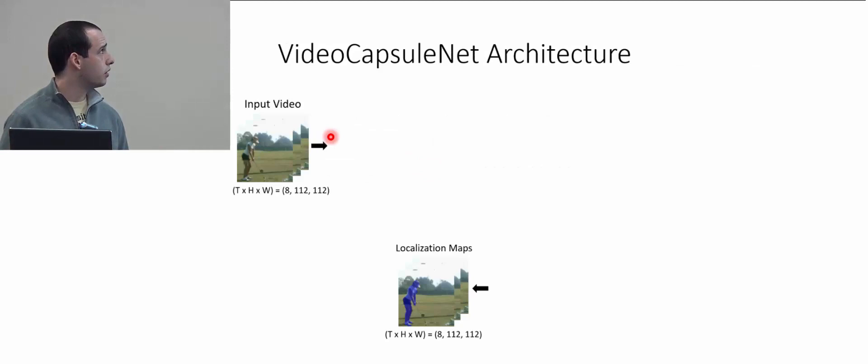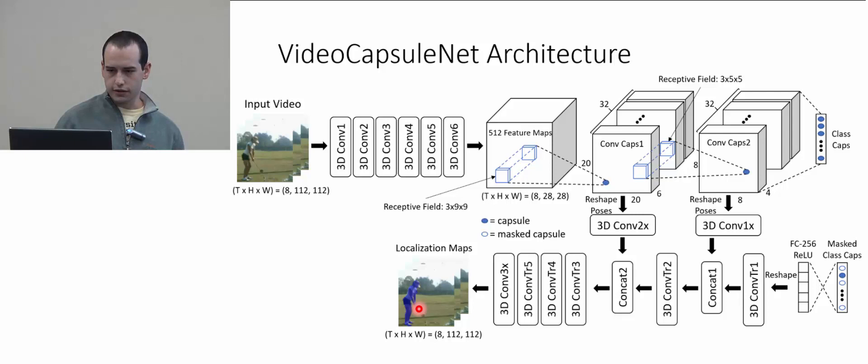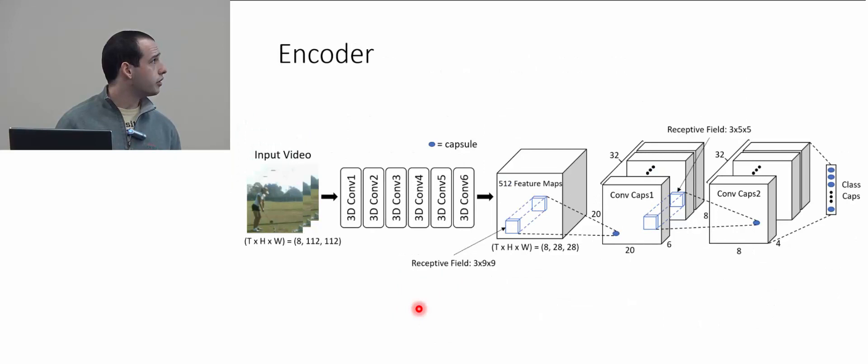For the Video Capsule architecture, we begin with an input video of eight frames at 112 by 112 pixels. We want localization on all eight frames — given an actor, we want to localize within each frame where the actor is — and we also want a classification of what the actor is doing. I'll go into the different parts of the network.